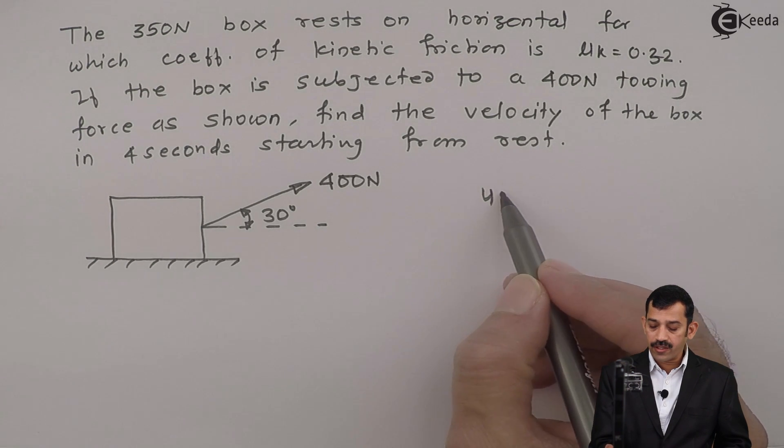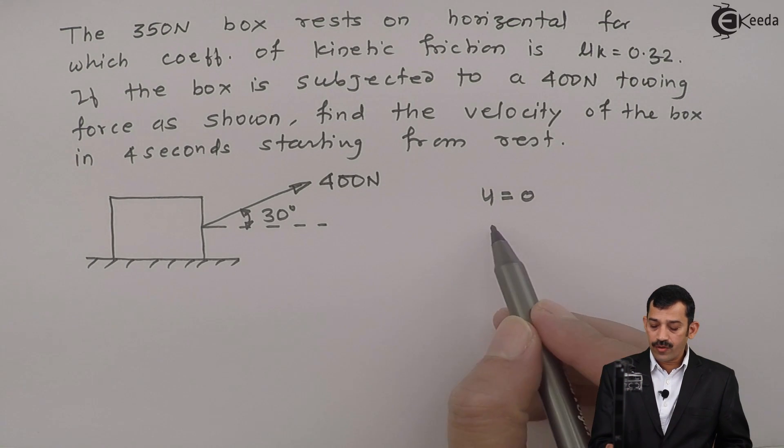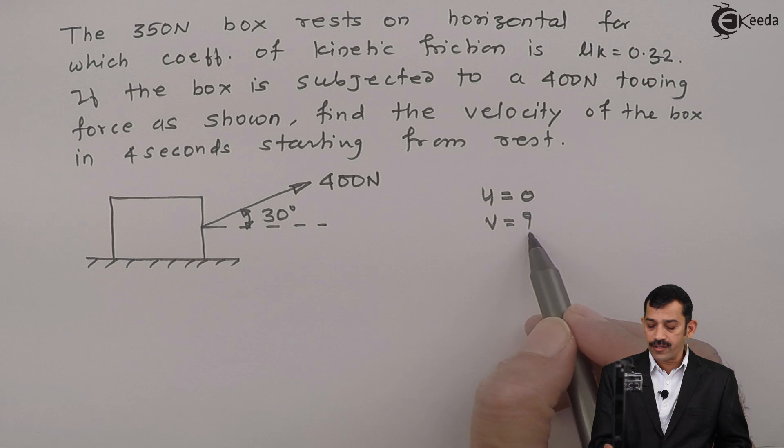Initial velocity is what? 0. You have to find out what? Final velocity at t equal to 4 seconds.